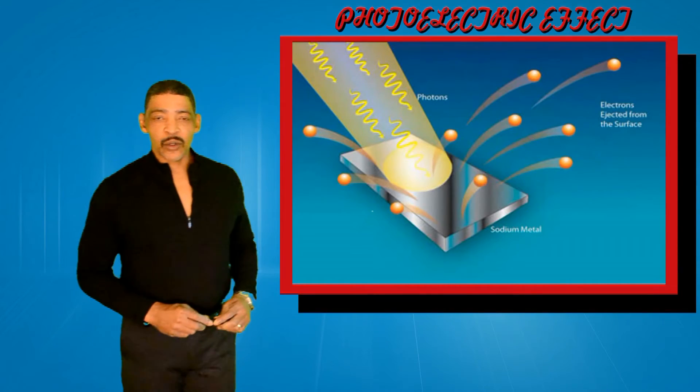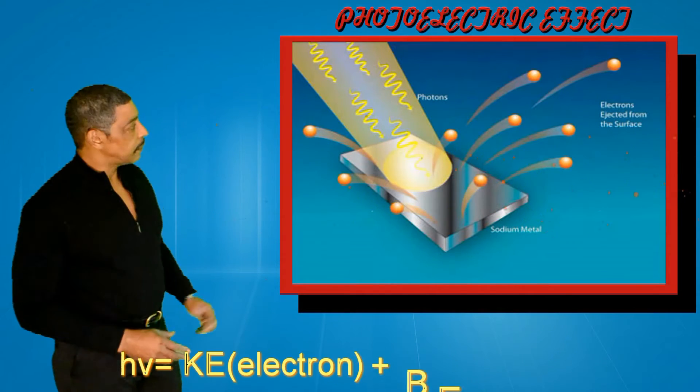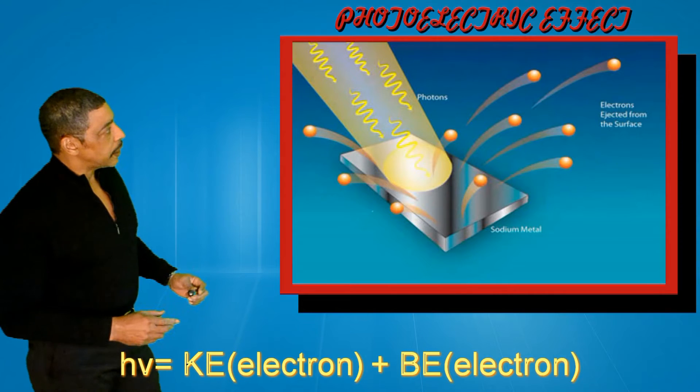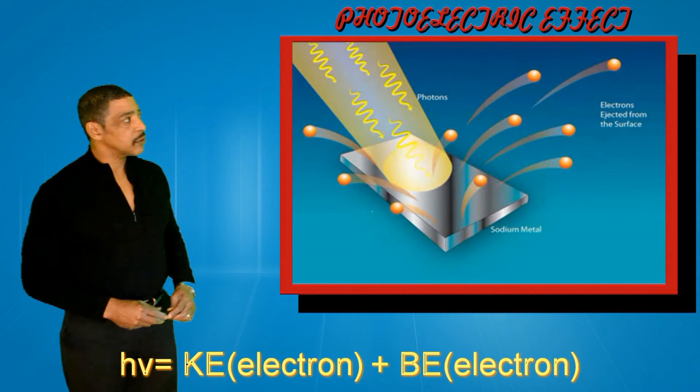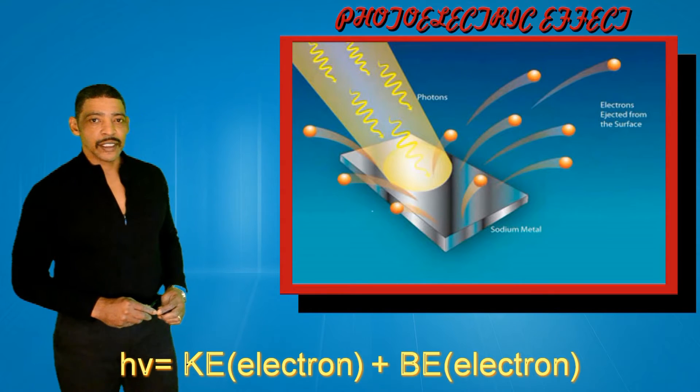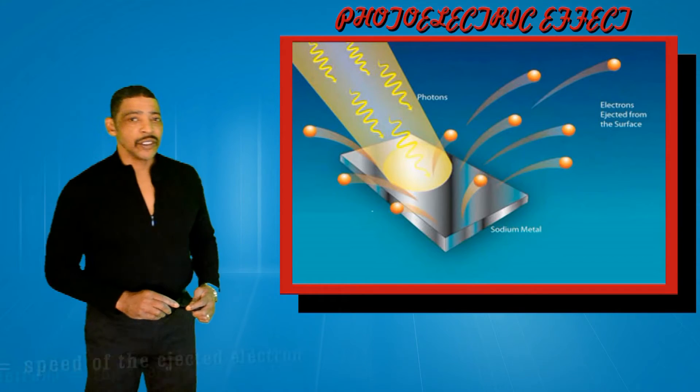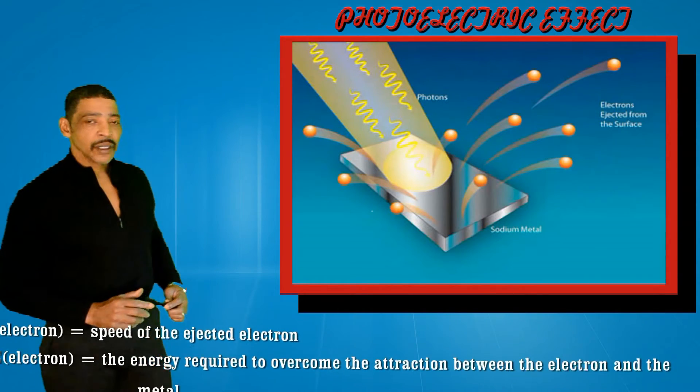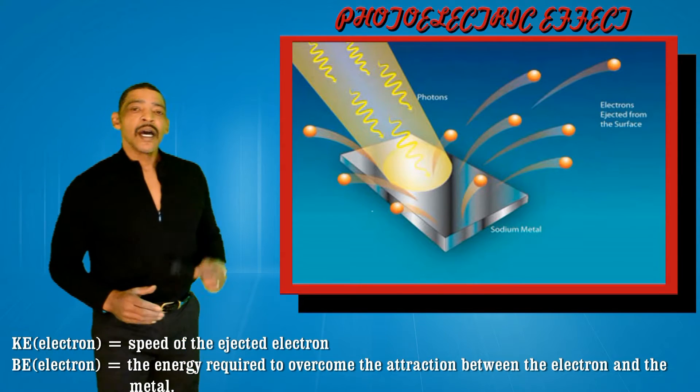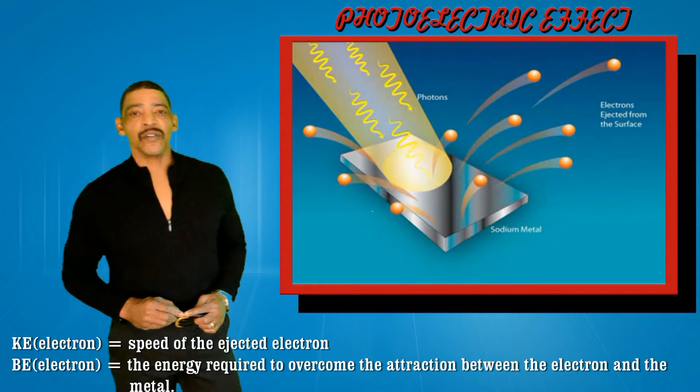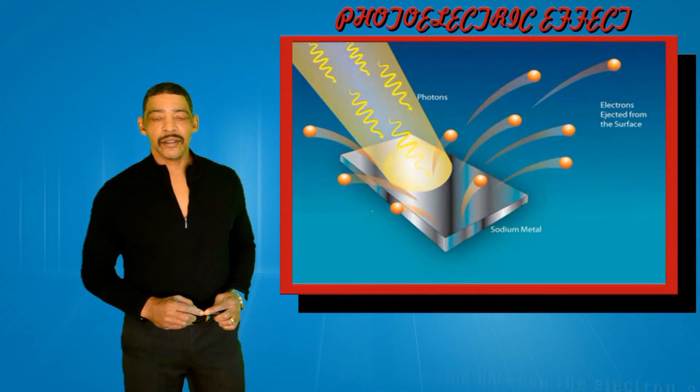Relying on Planck's equation, Albert Einstein was able to explain a phenomenon called the photoelectric effect, where light shining on a clean metallic surface will cause the surface to emit electrons. However, there is a minimum frequency of light required, below which no electrons will be emitted. Einstein called these units of energy that cause the emission of electrons, photons.